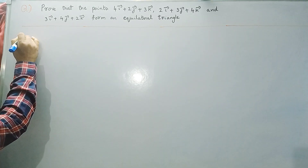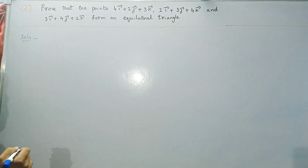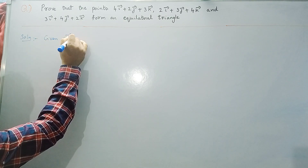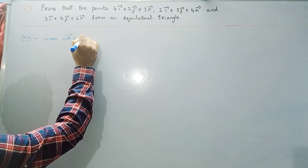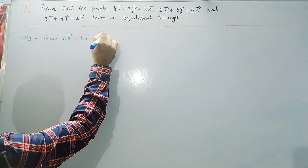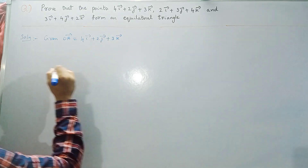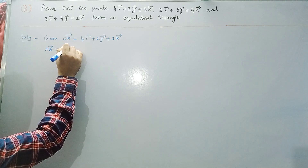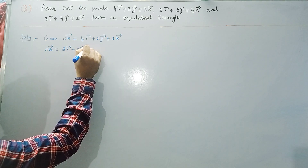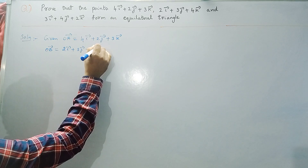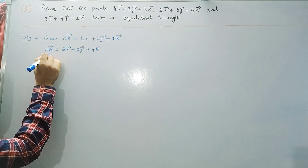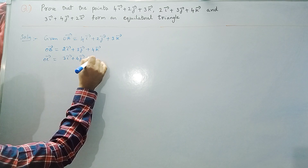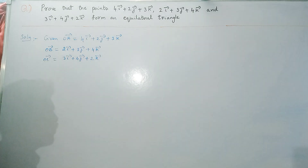Solution: the given three position vectors are OA = 4i + 2j + 3k, OB = 2i + 3j + 4k, and OC = 3i + 4j + 2k.